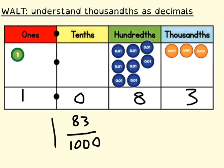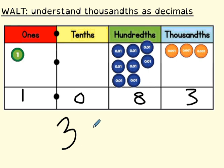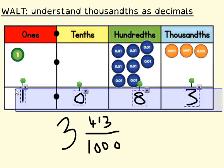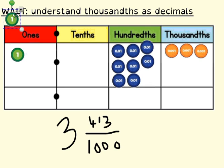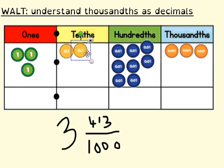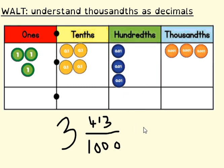Let's take a look at the second example. This time I am going to represent on my place value grid the fraction three wholes and four hundred and thirteen thousandths. I've got three wholes, four tenths, one hundredth, and three thousandths. Written as a decimal: 3.413.